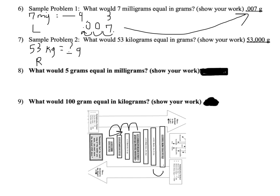And we need to figure out how many places. So we're starting at kilo, down one, two, three to get to grams. So we need to move our decimal three places to the right. We started with 53. One, two, three places. Add the zeros that we need, and our answer is 53,000 grams.